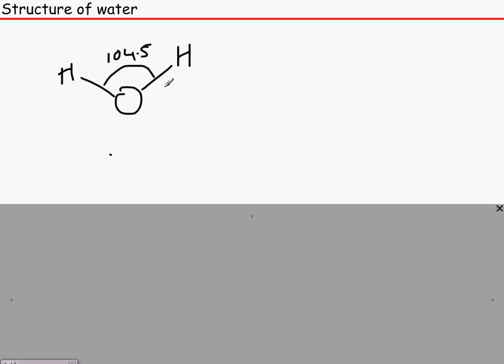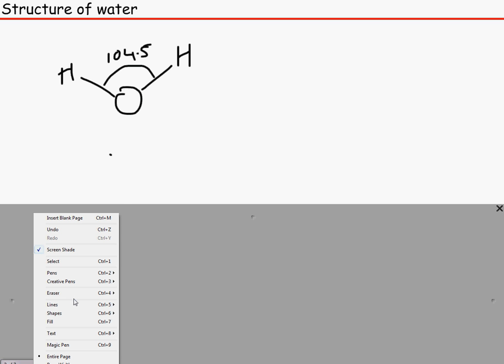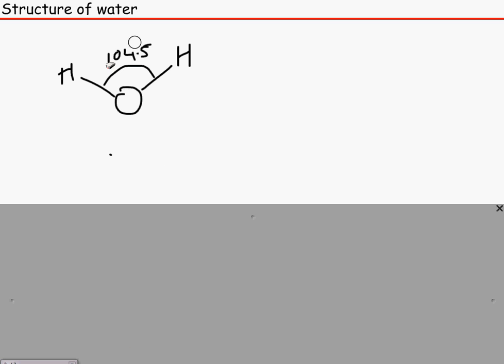The angle between those two bonds are 104.5 degrees, and that is because there are two lone pairs which are on the oxygen atom. You do not need to know that if you do not do chemistry. It was just a little chemistry bit for you.